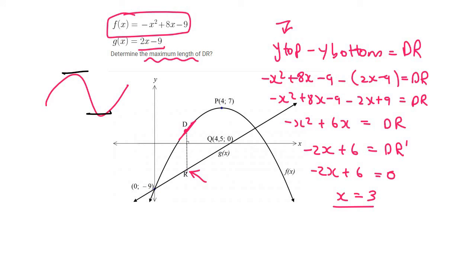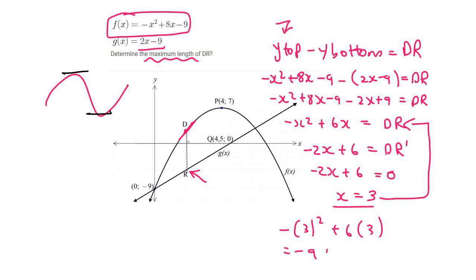So you plug x equals 3 back into the equation for the length DR. That gives us minus 9 plus 18, and so the maximum length is 9.